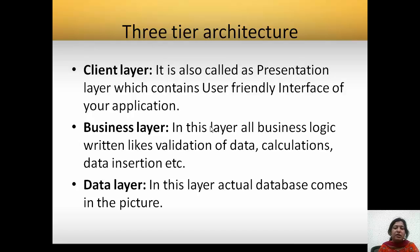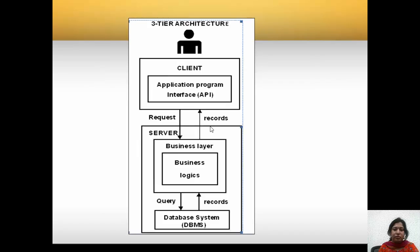Next, we have the business layer. In this layer, we have all types of calculations, validations, and everything located in this business layer. This layer is loaded with lots of security so that there are no malicious practices or tampering. At the last layer, we have the data layer which is connected to the actual database. In the three-tiered architecture, the client uses the API, in between we have the business layer, which in turn queries the DBMS located remotely.